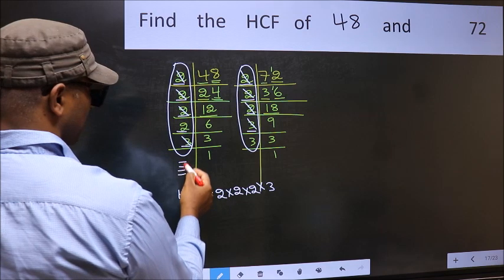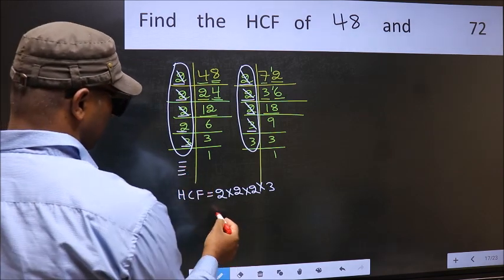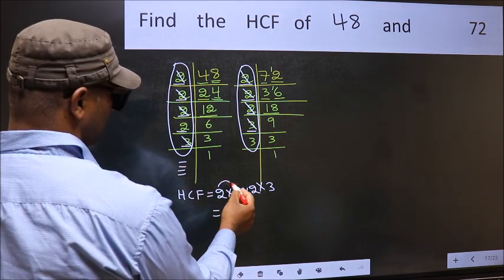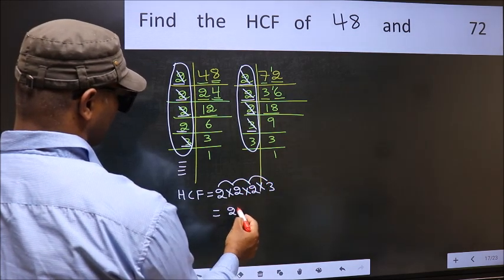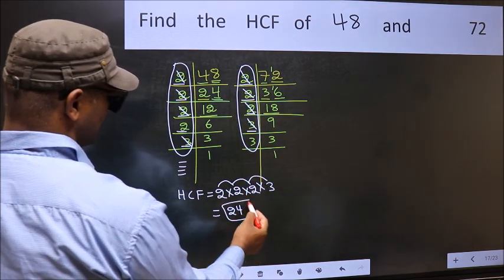No more numbers have been left out. So our HCF is 2 into 2, 4 into 2, 8 into 3. 24 is our HCF.